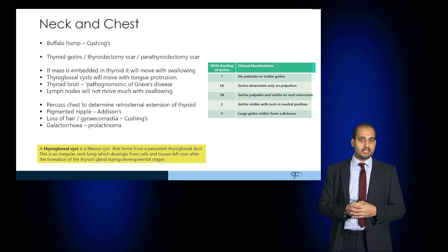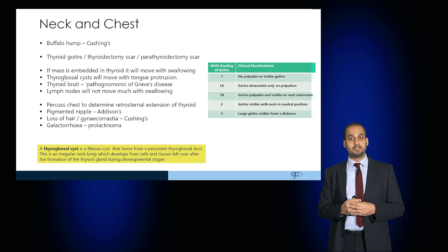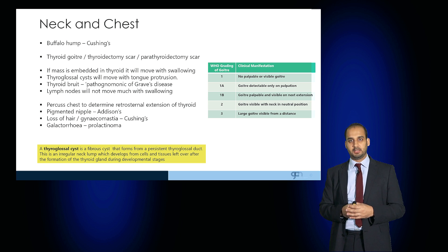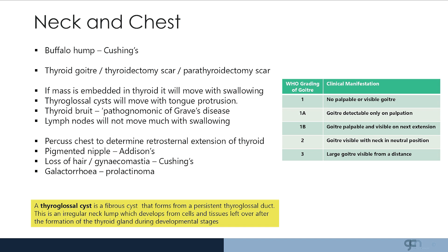The World Health Organisation has a system of grading a goiter. Grade 1 is no palpable or visible goiter; 1a is a goiter detectable on palpation; and 1b is where the goiter is palpable and visible when the neck is held in extension. A grade 2 goiter is visible with the neck in a neutral position, and grade 3 is a large goiter that's visible from a distance.